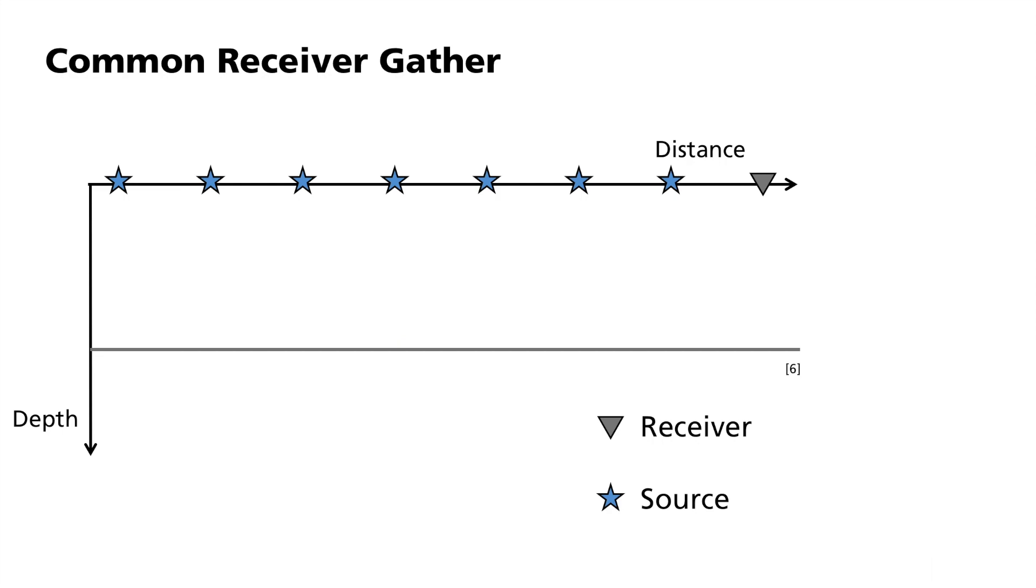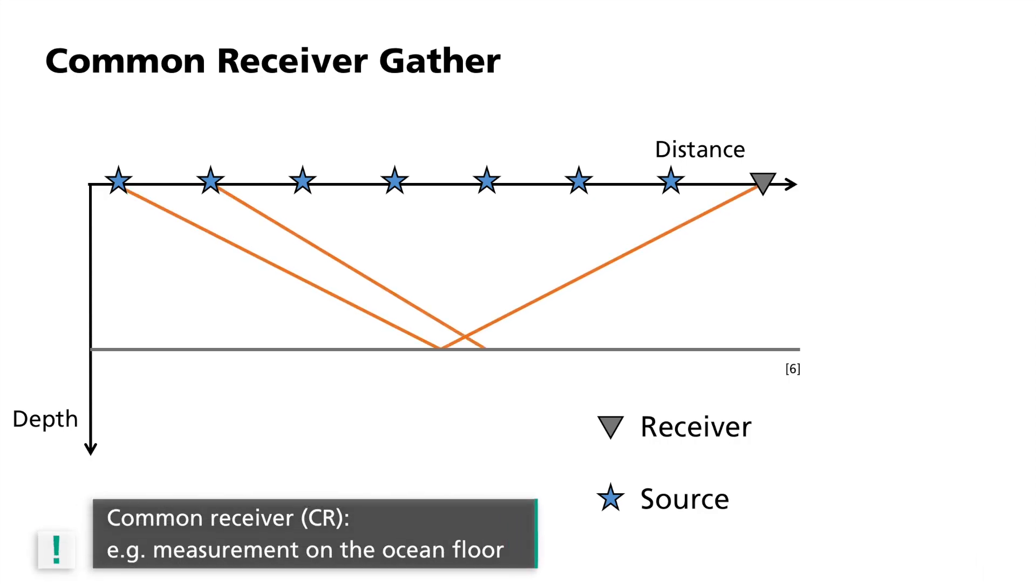Both in marine and land seismics, one also uses the reverse version. This is called common receiver gather and corresponds together with a common receiver position. This arrangement is used, for example, when instruments on the ocean floor are used.